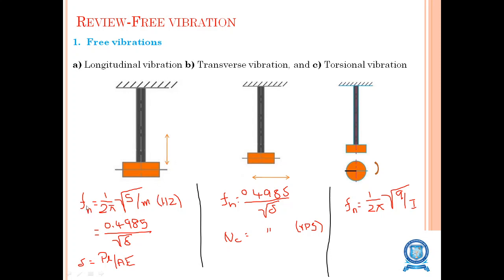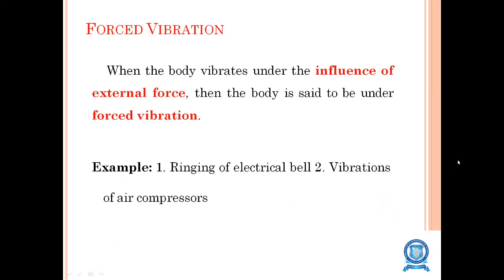In longitudinal vibration, the mass vibrates up and down, and the natural frequency fn is equal to 1 by 2π times root of s by m in hertz, or 0.4985 divided by root of delta. For transverse vibration, the same value fn equals 0.4985 divided by root of delta. The critical speed is found in revolutions per second. In torsional vibration, the frequency is 1 by 2π times root of q by I.